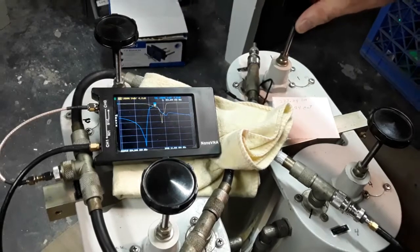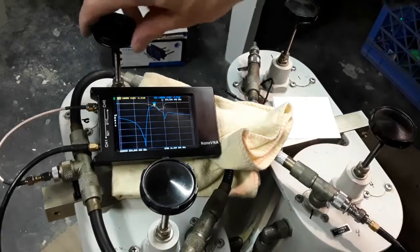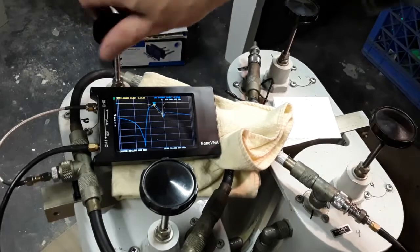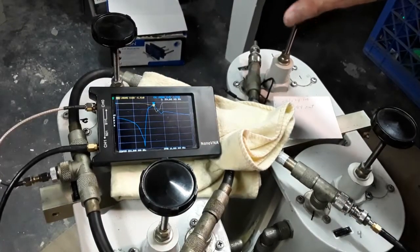Here I'm adjusting the receive side cans while observing the yellow SWR trace. The blue trace input is still connected to the transmit side.